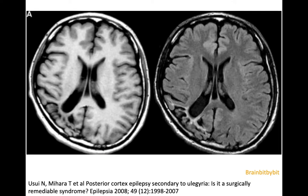In ulegyria, there is widening in the depth of the sulcus, giving it a mushroom appearance with gliosis of the cortex and subcortical white matter. It occurs mainly in the occipital and parietal regions in term neonates with hypoxia or hypoglycemia. The reason that mainly the depth of the sulcus is involved has to do with the selective vulnerability of this area.